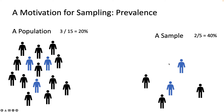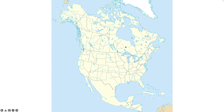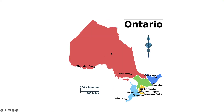Here, our sampling unit is the individual. There are more extreme examples where our sampling unit could be continents across the entire world. For instance, if we were to sample, we could get North America, and then sampling within the three countries of North America, we could get Canada, and even more specifically, we could get Ontario.